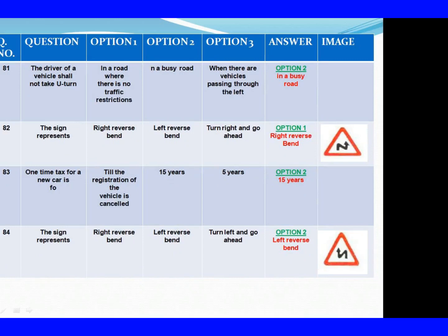Question 81: The driver of a vehicle shall not take a U-turn. Option 1: In a road where there is no traffic restriction. Option 2: In a busy road. Option 3: When there are vehicles passing through the left. The right answer is Option 2: In a busy road. Question 82: The sign represents. Option 1: Right reverse bend. Option 2: Left reverse bend. Option 3: Turn right and go ahead. The right answer is Option 1: Right reverse bend.